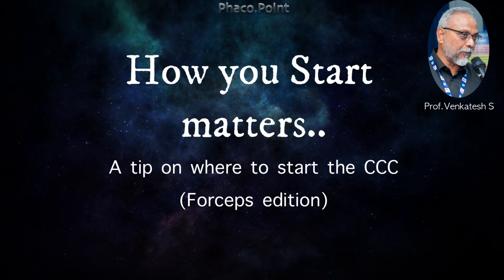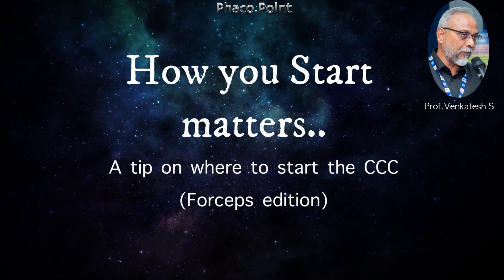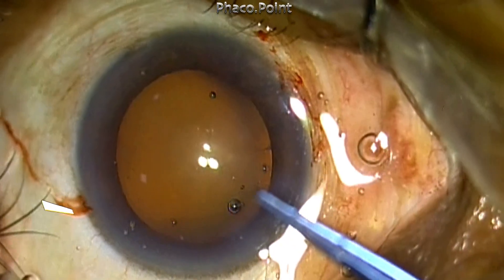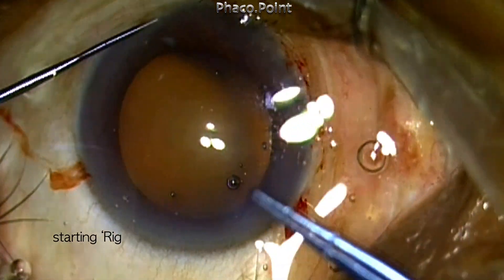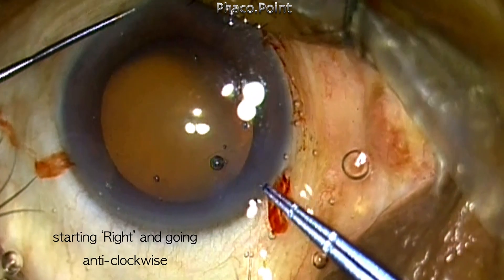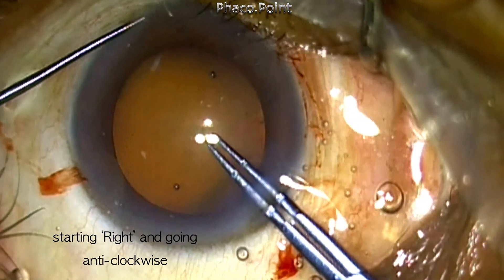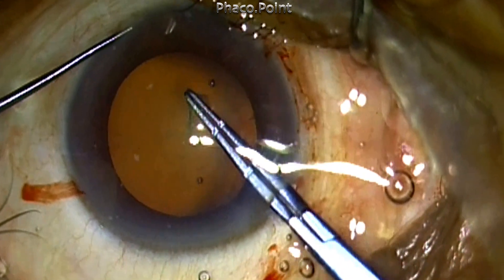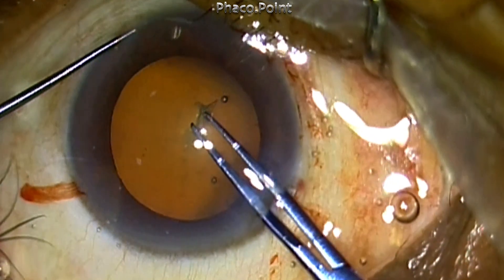Hello friends. Where you start the capsular axis plays an important role in how you successfully complete it. Most of us would like to initiate the tear towards the right and then take it in an anti-clockwise direction in order to propagate the tear, as you can see in this particular case.